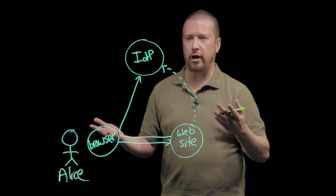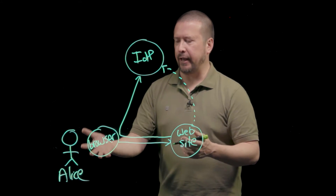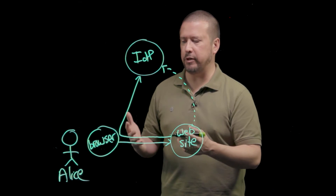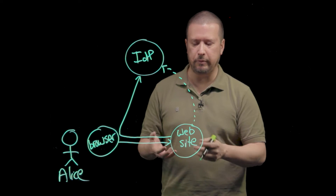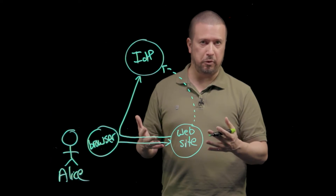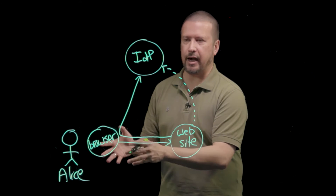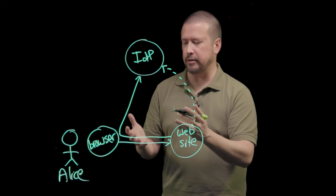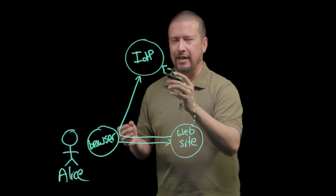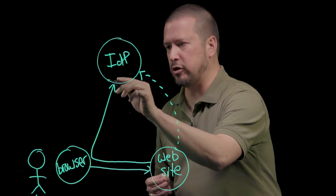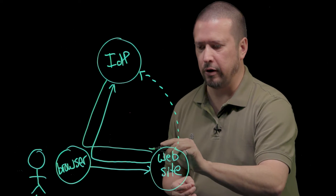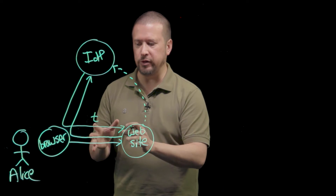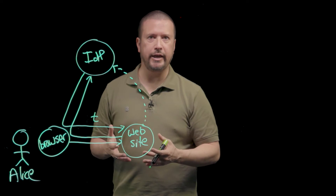Now Alice's browser is talking to the identity provider and she needs to sign in. Maybe she's going to enter a name and password in a form, or maybe she's going to present a smart card, or use an authenticator on her phone, or maybe multiple of those factors to get signed in. That's a matter between Alice and the identity provider. But once the identity provider has decided that Alice has signed in, it's going to issue a token for her and use her browser again to get that token back to the website — usually through an HTTP POST where the token is in the body of the post message.